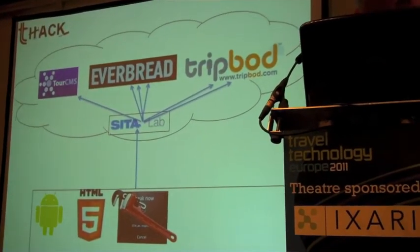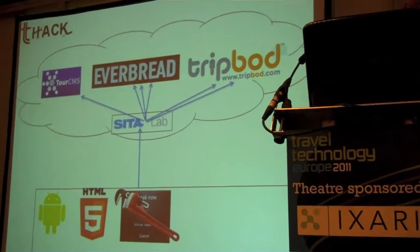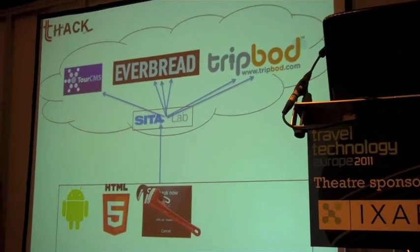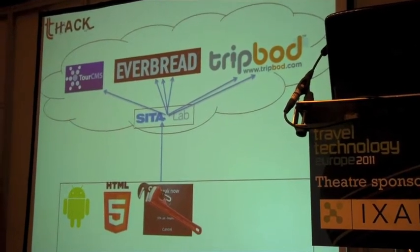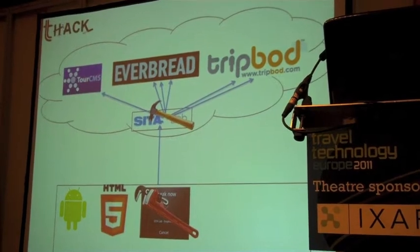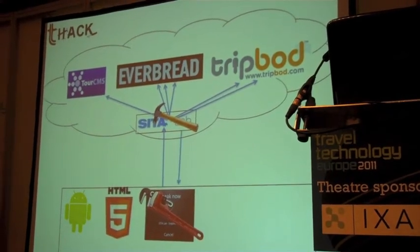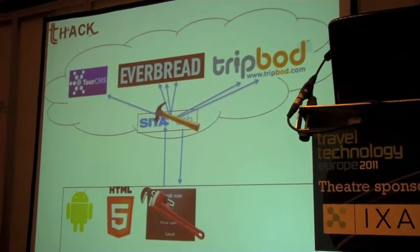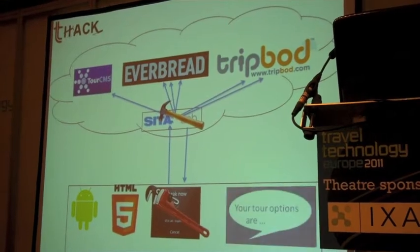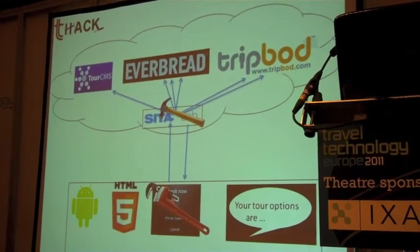Then we go, courtesy of Paul's API, to TripBot to find out the local knowledge at these particular destinations. We mash it all back together and send it back down to the phone, and the phone will tell you what your options are.